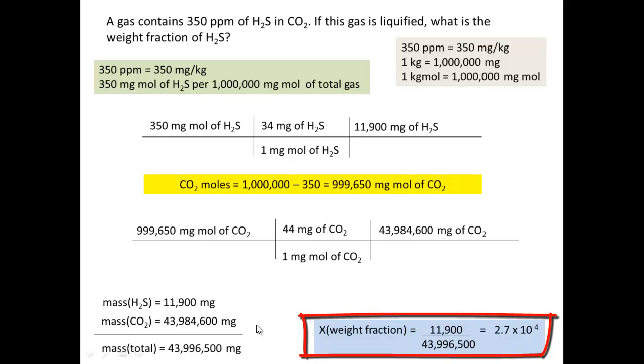To calculate the weight fraction, it's very easy. We only must divide the mass of the gas that we must discover the weight fraction. Then we will divide 11,900 mg from H2S by the total mass, that is 43,996,500 mg. The value of this division is 2.7 multiplied by 10 to the power of minus 4.